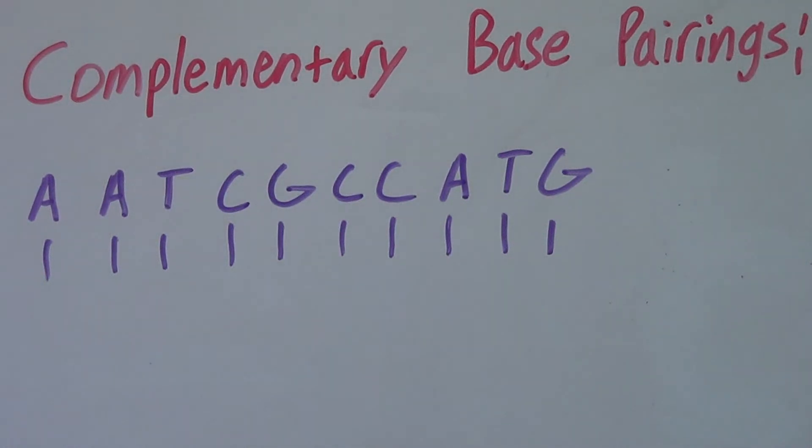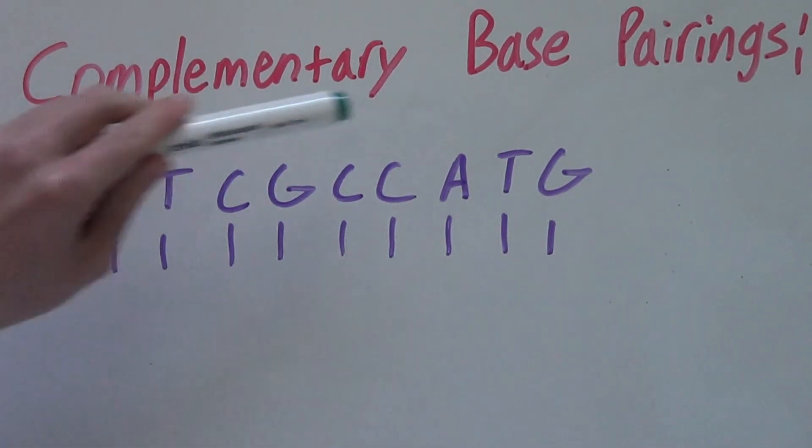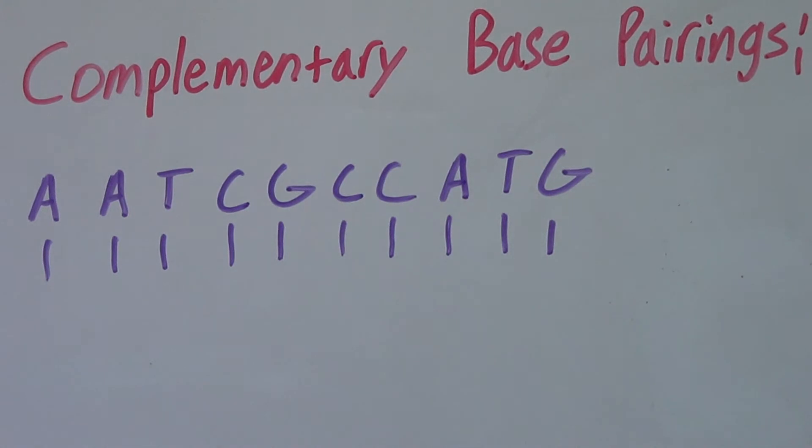Right now I'm going to show you how to do complementary base pairings. This is a biology topic that has to do with DNA. DNA consists of two strands. Complementary base pairings is where we are only given one strand and need to find the other.